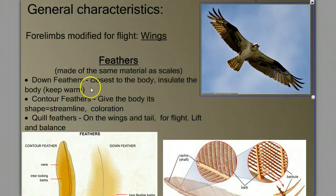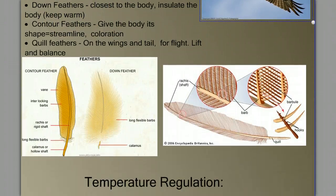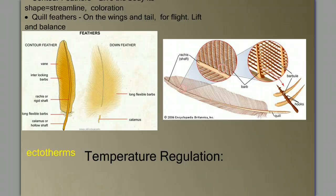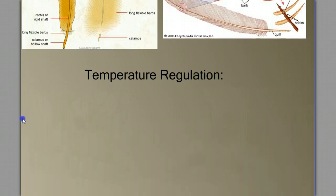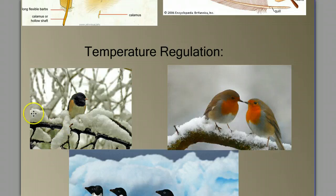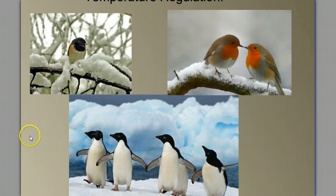The down feathers can help keep the bird warm, which lets us ask the question about temperature regulation. In all the vertebrates we've talked about up to now — the fish, amphibians, and reptiles — they were all ectotherms, meaning their body temperature is determined by their environment. This was a limiting factor in habitat possibilities for many of these animals, especially terrestrial vertebrates. But can birds live in climates where temperatures vary drastically? Can they live where it's cold? Let's look at these pictures and decide.